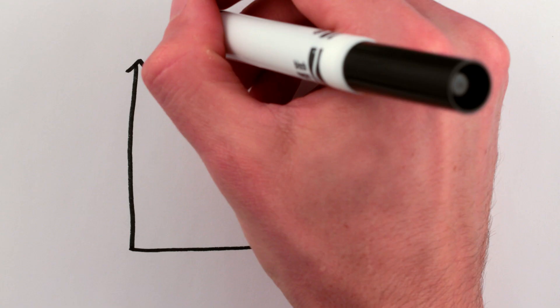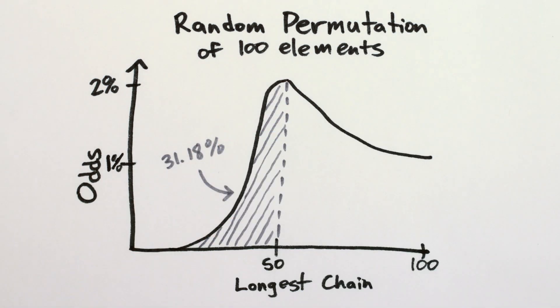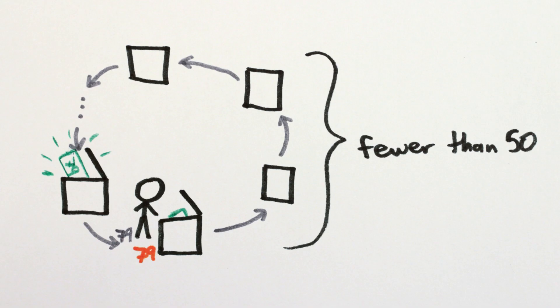Let me say that again, when you randomly rearrange the boxes, more than 30% of the time there are no chains of more than 50 boxes. So if you start on your own number and follow the chain, you'll end up at your bill within 50 steps. And so will everyone else.